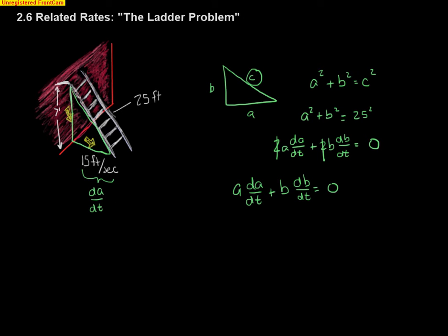And the rate going down the wall, that's going to be db dt. And now a and b are just the lengths of the sides. So if I use the Pythagorean theorem knowing that this is 25, and then they told me when the top of the ladder gets 7 feet, I should be able to use the Pythagorean theorem and figure out what the length of a is.